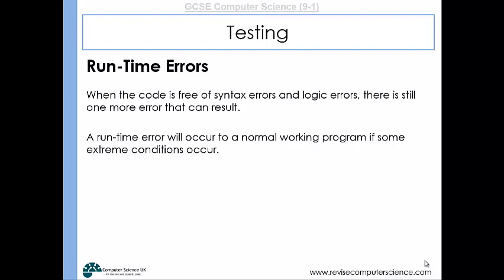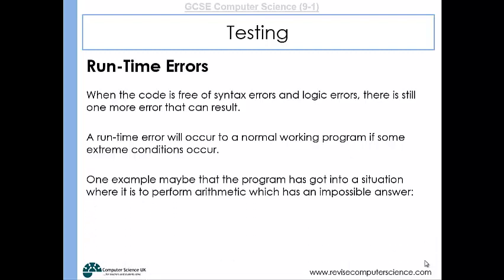So these will occur in a normal working program if some extreme condition occurs. So for example it might be that a program gets into a situation where it's to perform an arithmetic which has an impossible answer. For example you may have a calculation and the user inputs a zero as the number that we're dividing by. And because we can't divide by zero we get a runtime error.